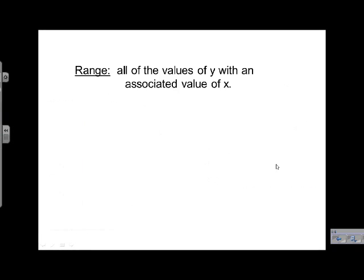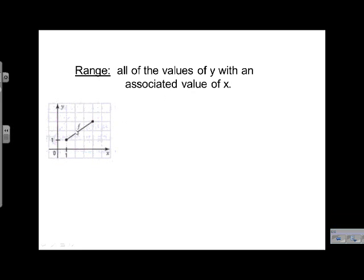Let's take a look at range now — just the opposite. We're looking at all the values of y with an associated value of x. Now instead of going left to right, we're going bottom to top. Where's our lowest point? It happens right here. What's our y-coordinate at that lowest point? Our lowest value of y is 1.